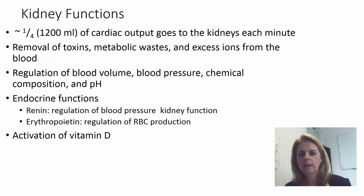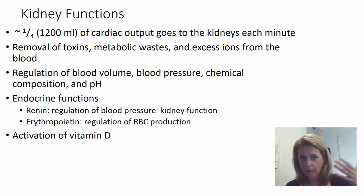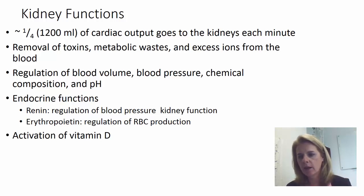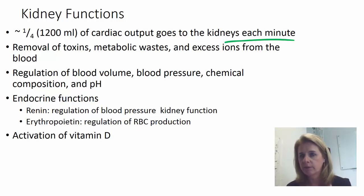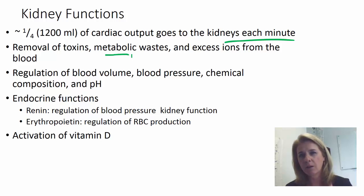About a quarter of your cardiac output — so about a fourth of how much blood your heart is pumping out — goes through the kidneys each minute. So they're very vascular, basically filtering a lot of blood all the time. As that blood goes through the kidneys, you can remove toxins, metabolic wastes, and excess ions like sodium.